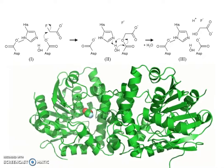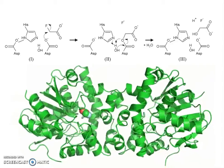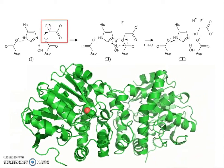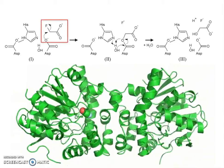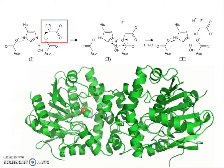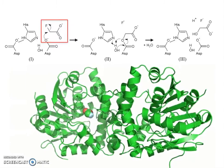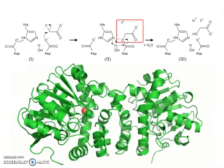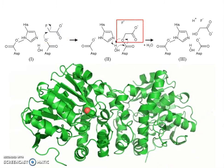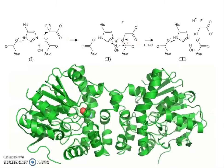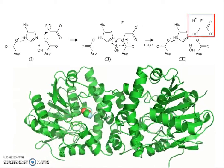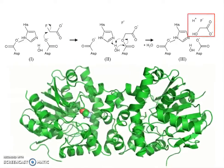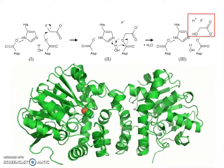Fluoroacetate dihalogenase utilizes a catalytic triad of residues to allow SN2 attack of fluoroacetate, generating a covalent intermediate, followed by activation of water through histidine, hydrolysis, and the release of the fluoride ion and the glycolate product.